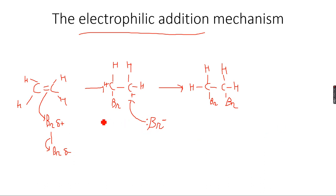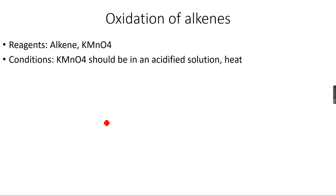Let's move forward now to the oxidation of alkenes, a very important topic. We use the alkene and we use KMnO4—potassium permanganate. The potassium permanganate has to be in an acidified solution and we need to heat it. This is an oxidizing agent, so let's go through the rules of the oxidation of alkenes.